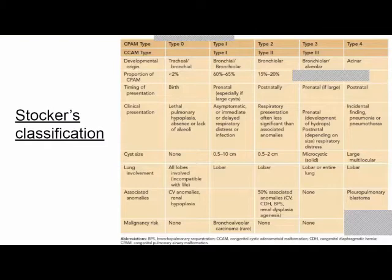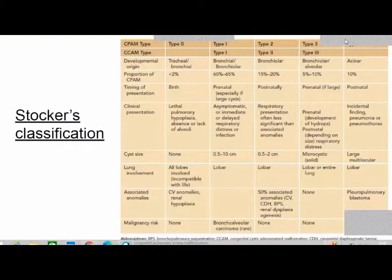Type 2 lesions are the next most common, accounting for 15 to 20%. Clinical presentation is generally postnatal and respiratory, sometimes associated with pneumothorax. Cyst size is 0.5 to 2 centimeters. Involvement is lobar, but type 2 is more associated with congenital anomalies like cardiovascular defects, CDH, and bronchopulmonary sequestration.